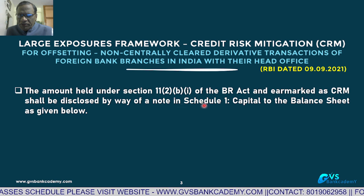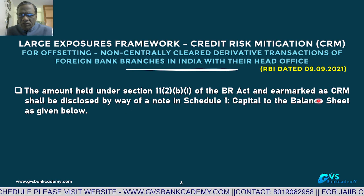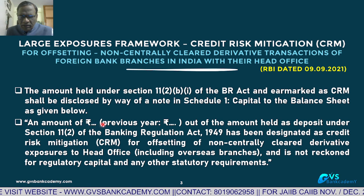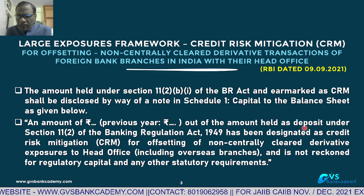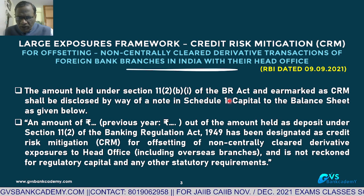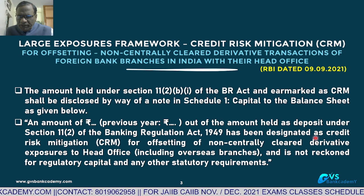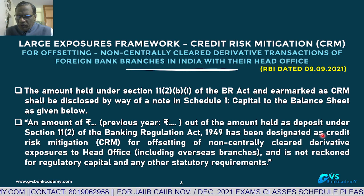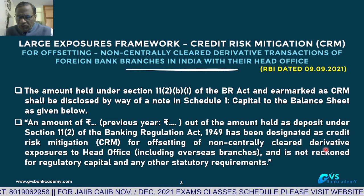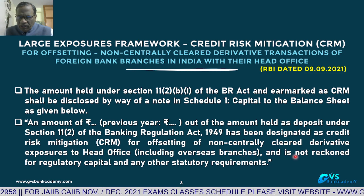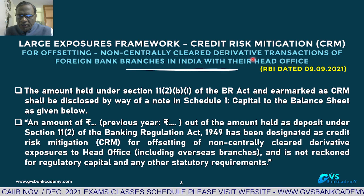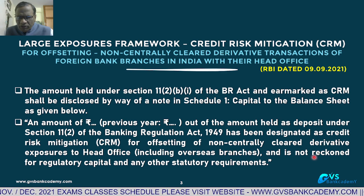The disclosure is in Bank Balance Sheet Schedule No. 1 — Capital. The format is: an amount of [current year] (previous year amount). Out of the amount held as deposit under Section 11, all foreign bank branches operating in India have to maintain a deposit with RBI. Some part of that amount has been designated and utilized as Credit Risk Mitigation for offsetting and netting of non-centrally cleared derivative transactions with head office, including overseas branches, and it is not recognized as regulatory capital.